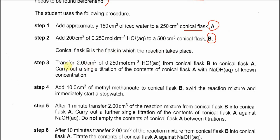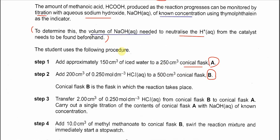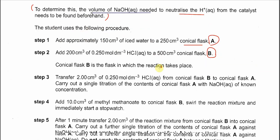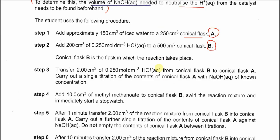Step 3: transfer 2 cm³ of 0.25 mol/dm³ HCl from conical flask B to conical flask A. This is to find the volume of sodium hydroxide needed to neutralize the acid catalyst. The reaction has not yet started, and step 3 is the one used to find the volume of NaOH that reacts with the HCl catalyst.